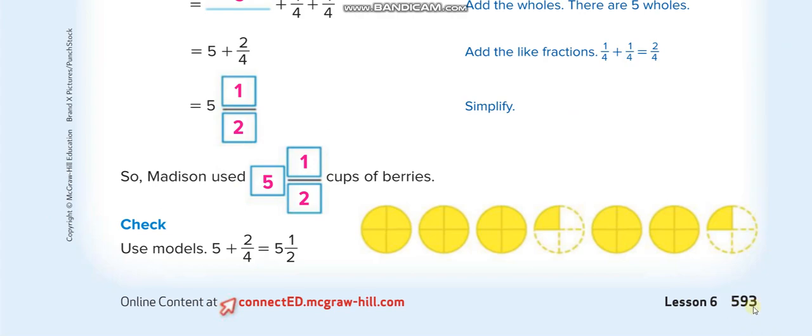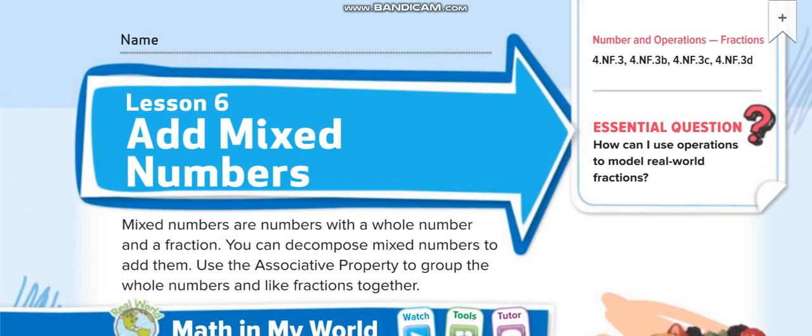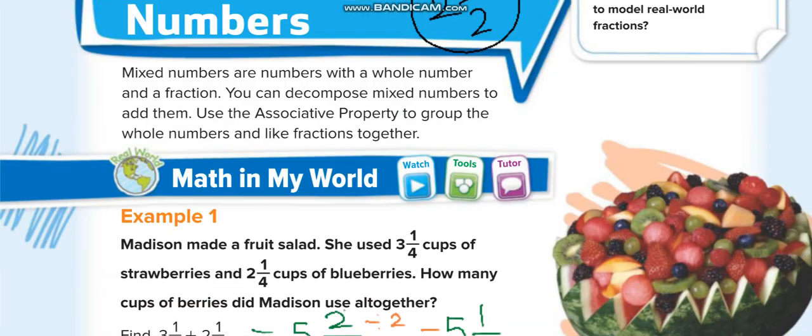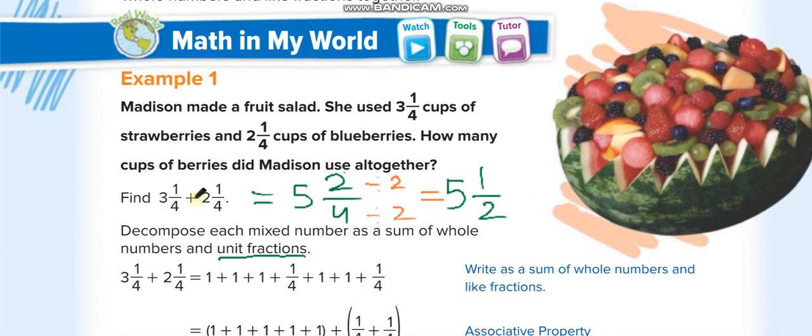Okay first of all you have to understand what are mixed numbers. Whenever we write a whole number and a fraction together we call it a mixed number, like two whole and one over two. When we write it together we call it mixed numbers, so today we are going to add mixed numbers.